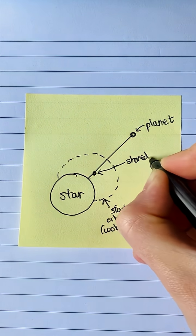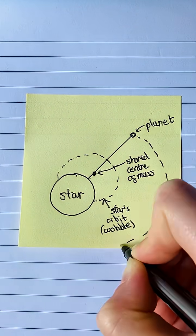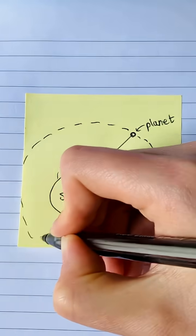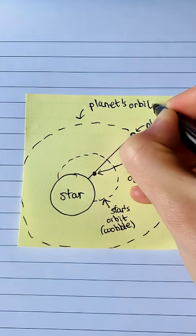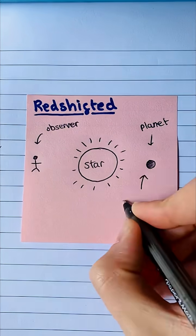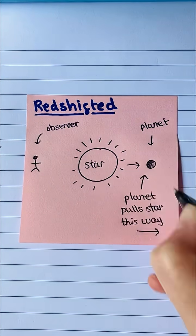The planet causes a wobble in the star's orbit, since the planet and the star orbit around their shared center of mass. This wobble causes the star's light to be red or blue shifted.